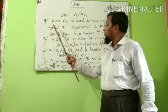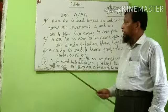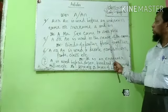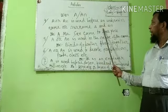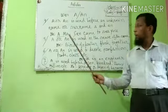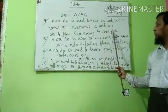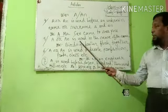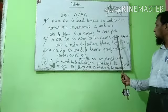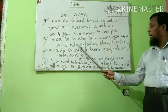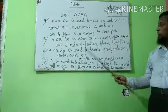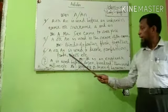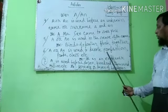Number four: A or AN is used before an unknown name or surname. Example: A Mr. Sain came to see you. Number five: A or AN is used in the sense of a saying. Example: Birds of a feather flock together.